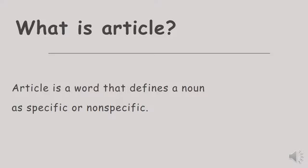Okay, what is article? In Bahasa Indonesia, article means kata sandang. The definition in English is: article is a word that defines a noun as specific or non-specific. Jadi, article itu adalah sebuah kata yang mendefinisikan sebuah kata benda sebagai kata benda tentu dan tidak tentu.